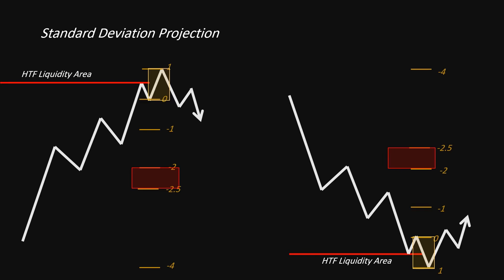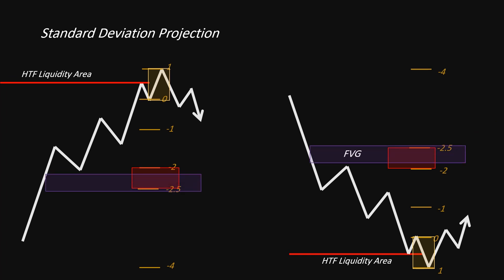Once you have identified potential targets, look for areas of liquidity that can serve as those targets. Ideally, focus on the -2 to -2.5 standard deviations as a target, as well as the -4 standard deviation. Look for areas where there is a PD array or area of liquidity that aligns with these levels, as these arrays help identify where buyers and sellers are likely to be active.